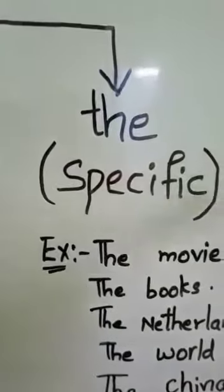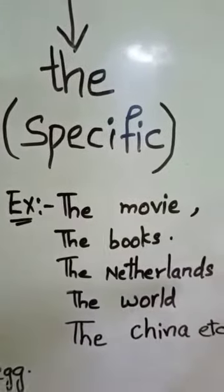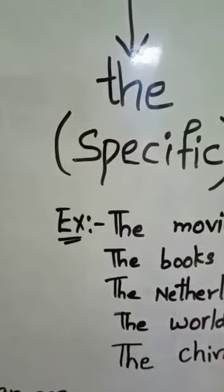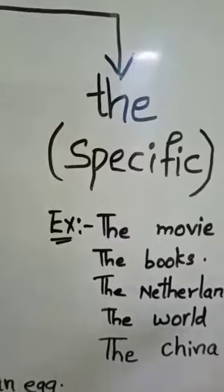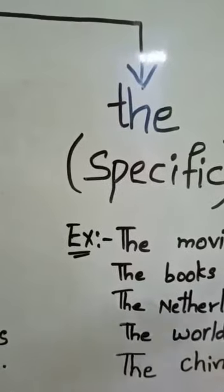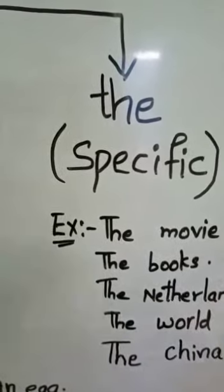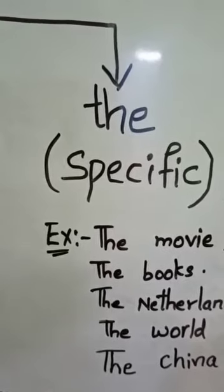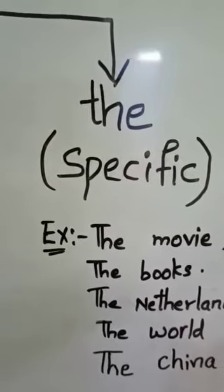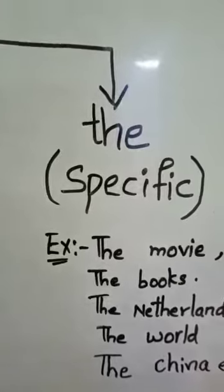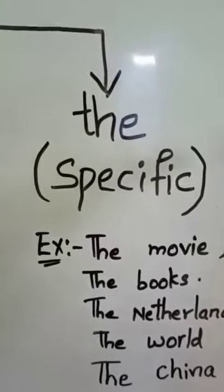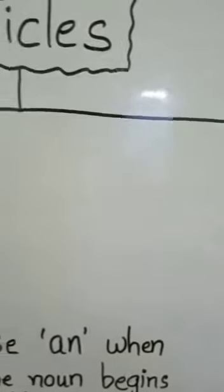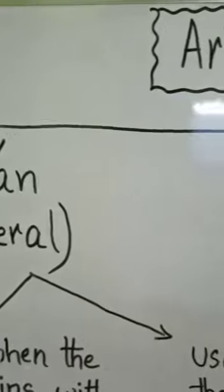The examples are the movie, the books, the Netherlands, the world, the China, etc. Like for example, if I say in a sentence formation, let's read the book. Let's read the book. The book here I am pointing to a specific thing. Which thing here it is? It is the book. So I mean a specific book. So the is used for a specific noun, for a particular thing. Understood children?